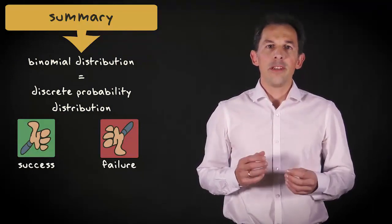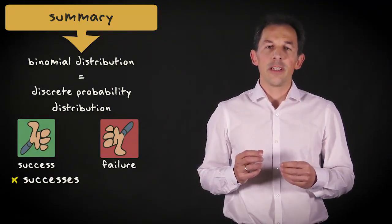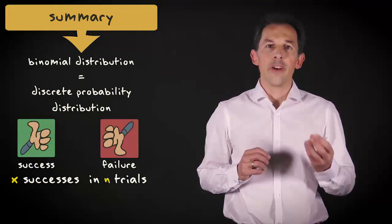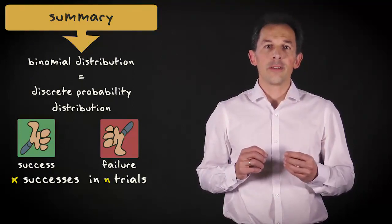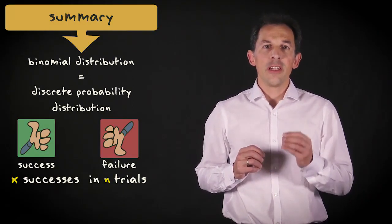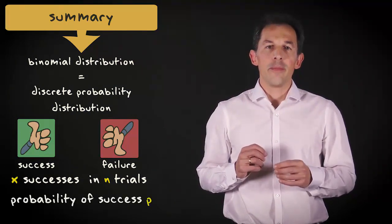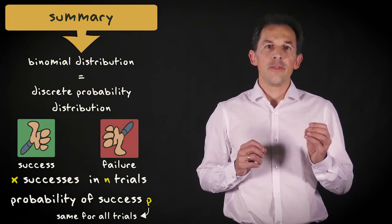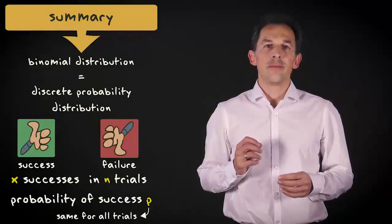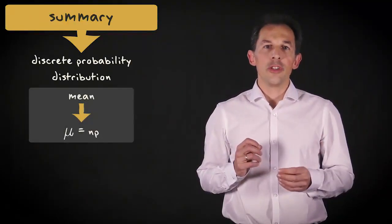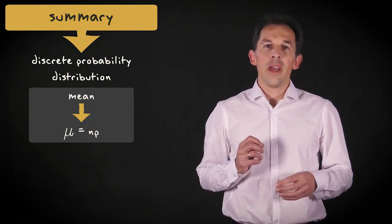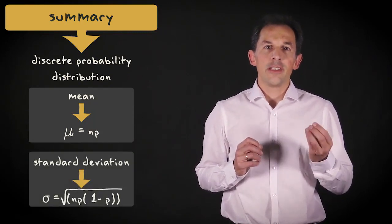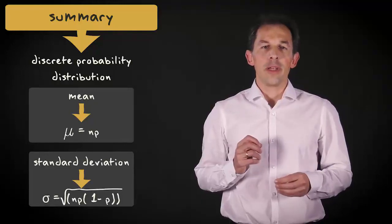It gives the probability of observing x successes in n outcomes of the random variable, so-called trials, with the probability of success on a single trial denoted by p. The binomial distribution assumes that p is fixed for all trials. The mean of such a distribution is n times p, and its standard deviation is the square root of n times p times 1 minus p.